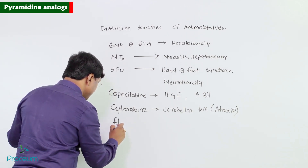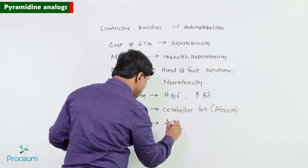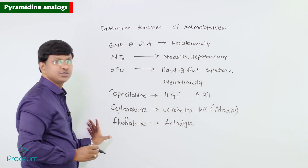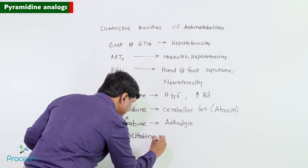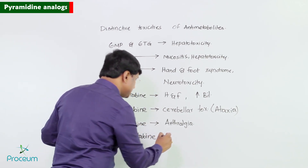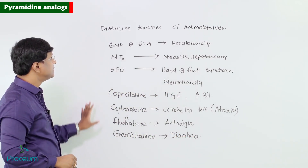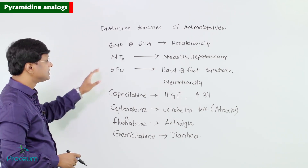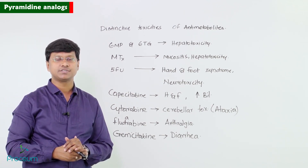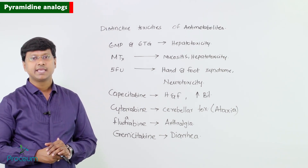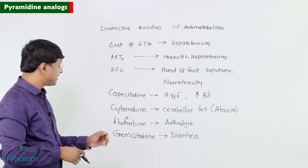Fludarabine is associated with pain within the joints, that is arthralgia. Gemcitabine is associated with diarrhea. In summary: 6-mercaptopurine and 6-thioguanine cause hepatotoxicity; methotrexate causes mucositis and hepatotoxicity; 5-fluorouracil causes hand and foot syndrome and neurotoxicity; capecitabine causes hand and foot syndrome and hyperbilirubinemia; cytarabine causes cerebellar ataxia; fludarabine causes arthralgia; and gemcitabine causes diarrhea.